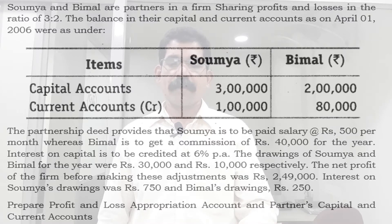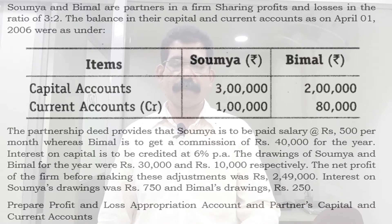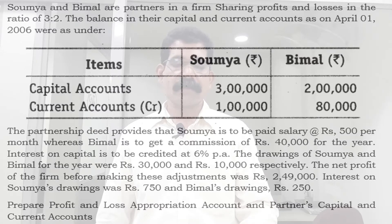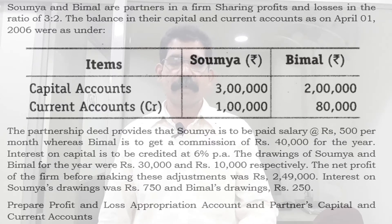Interest on capital is to be credited at 6% per annum. The drawings of Soumya and Bimel for the year were Rs. 30,000 and Rs. 10,000 respectively. The net profit of the firm before making these adjustments was Rs. 2,49,000. Interest on Soumya's drawings was Rs. 750 and Bimel's drawings Rs. 250.